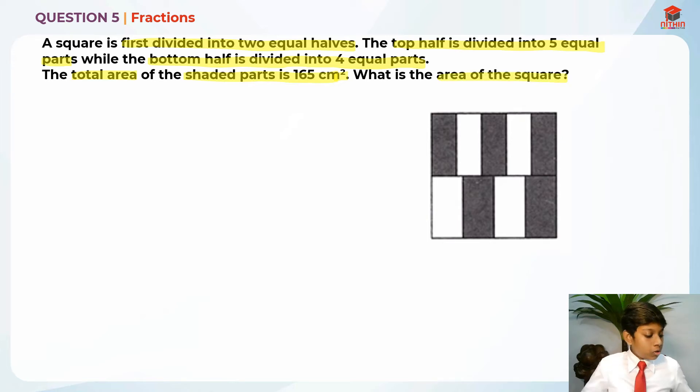We know that these 2 are divided into 2 equal parts. And we know that over here, the first one, 3 fifth is shaded. And the second bottom half, 2 quarter is shaded.